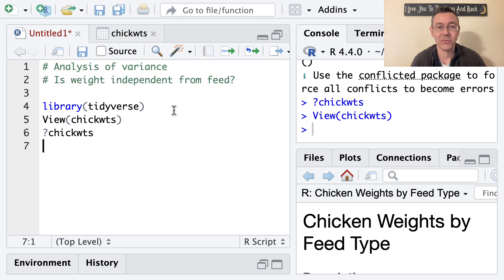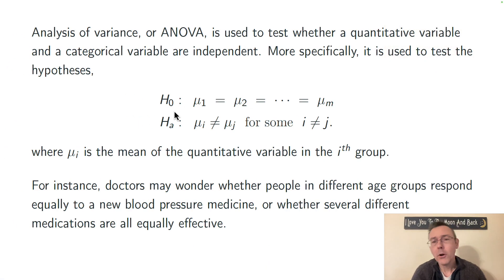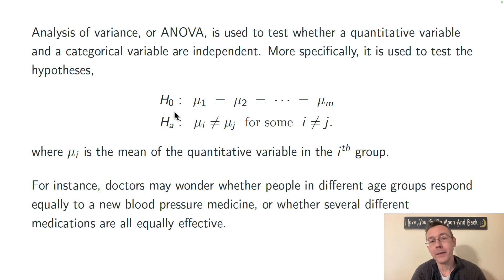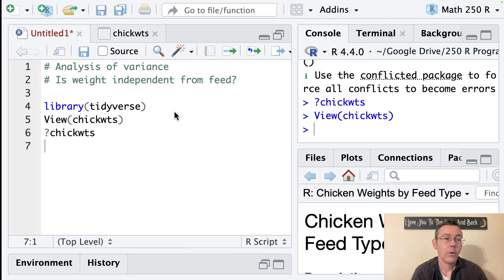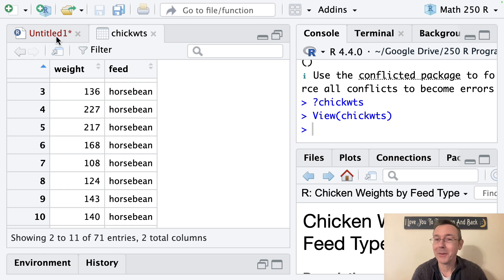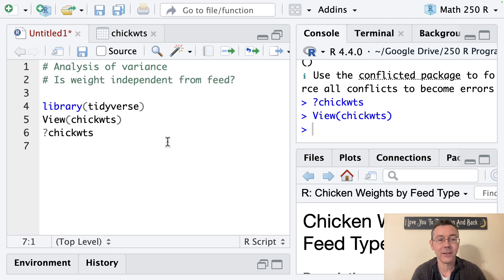We're going to do that using an analysis of variance. As a quick reminder, ANOVA is used to test whether a quantitative variable and a categorical variable are independent of one another. It does that by considering the null hypothesis that the group means are the same across the board. In the present context, our null hypothesis is that the average weight for these chicks will be the same regardless of the feed in the larger population. What we have here is just sample data, and we'd like to know whether we have evidence for these two being dependent in the larger population.